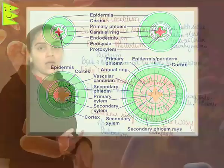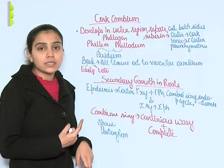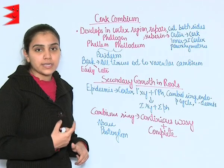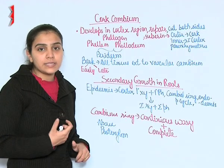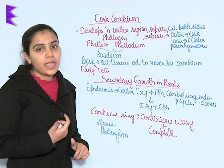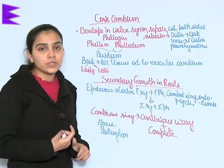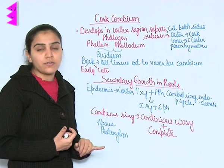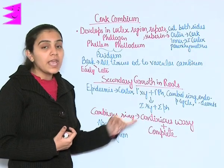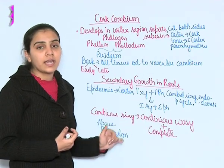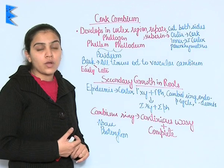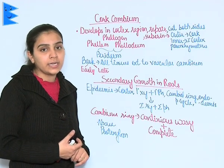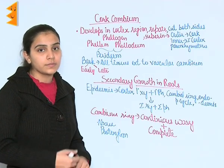Above proto xylem, a continuous wavy and complete cambial ring is present. It becomes active and hence shows the formation of secondary xylem and secondary phloem. This secondary growth is the characteristic feature of dicots; it is not seen in the case of monocots.